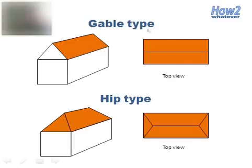First of all, it is only applicable for a gable type of roof and a hip type of roof. The main difference between these two types of roof is that the hip type has angles on every side of the roof, as you can see at the top view in this picture, whereas the gable type does not.